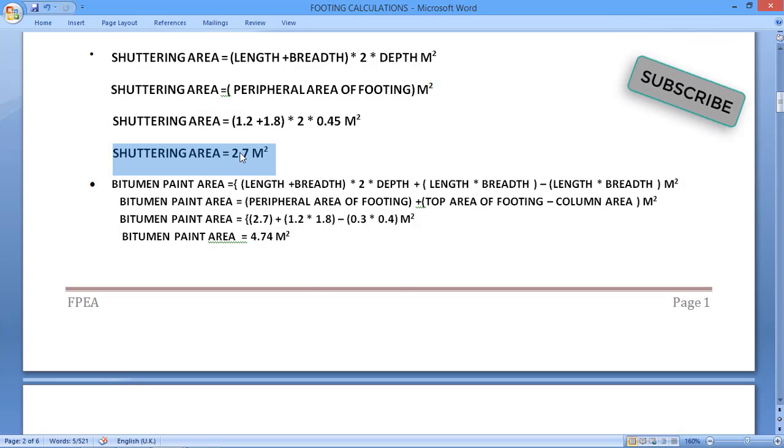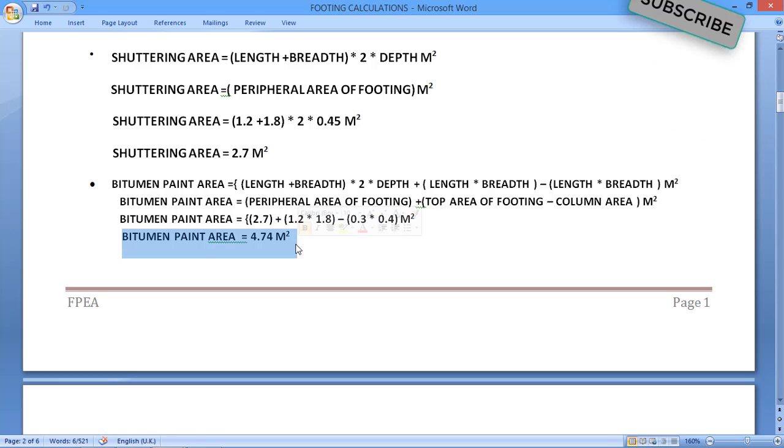Then the value we'll get is 2.7, which we are getting from the shuttering area value, plus 1.2 by 1.8, which is the top area of footing, minus 0.3 times 0.4, which is the length and breadth or area of column. So we are getting bitumen paint area as 4.74 square meter.